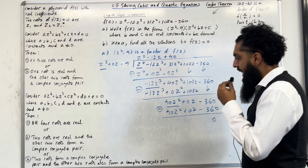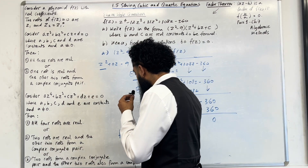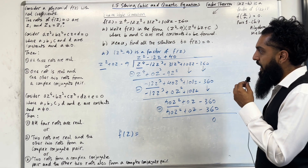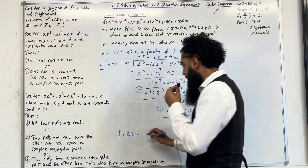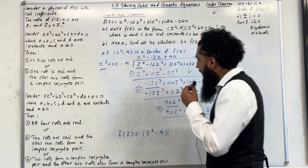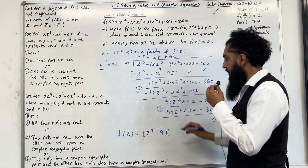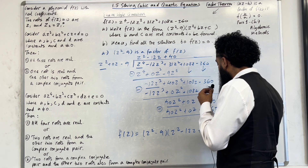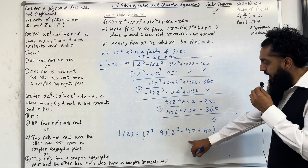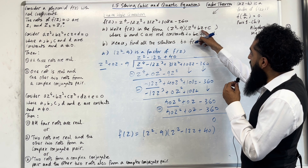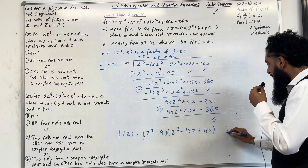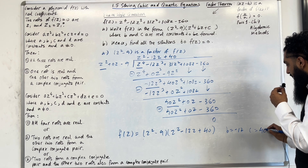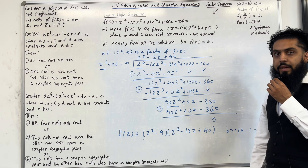So f(z) = (z² − 9)(z² − 12z + 40). Comparing with the given form z² + bz + c, we can see that b = −12 and c = 40. This completes part A of the exam style question.